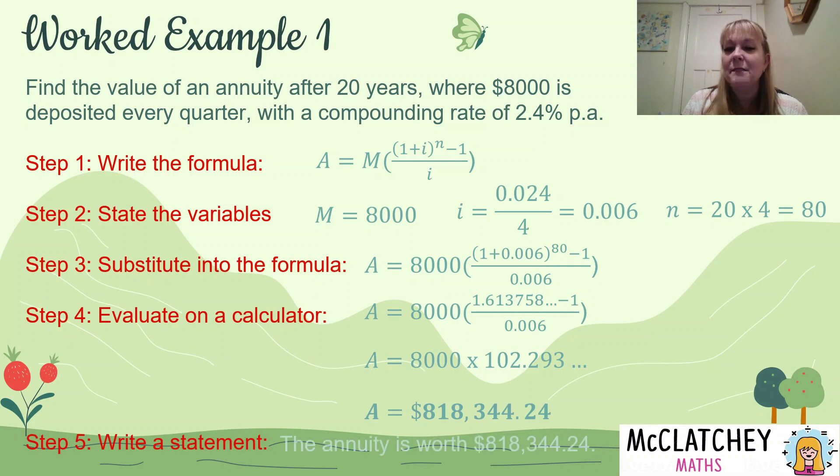I'm going to multiply that now by 8,000, which is the payment and I get $818,344.24. And it's always a good idea to write a statement at the end as well, making sure you've used a dollar sign and round it off to two decimal places because it's money. Now you might be thinking that is a lot of money. Have I done it correctly?